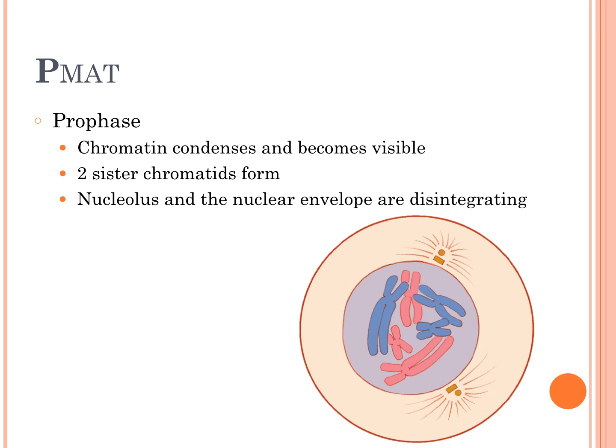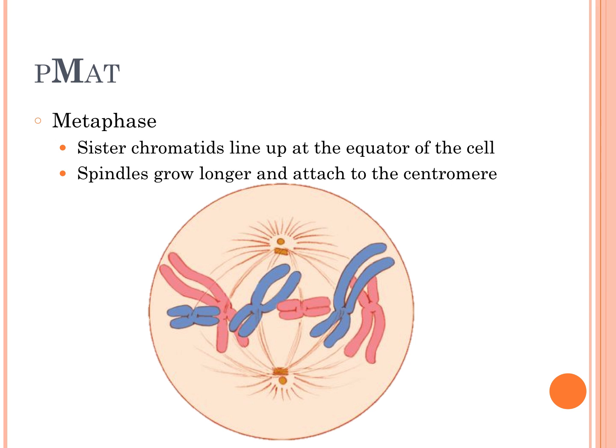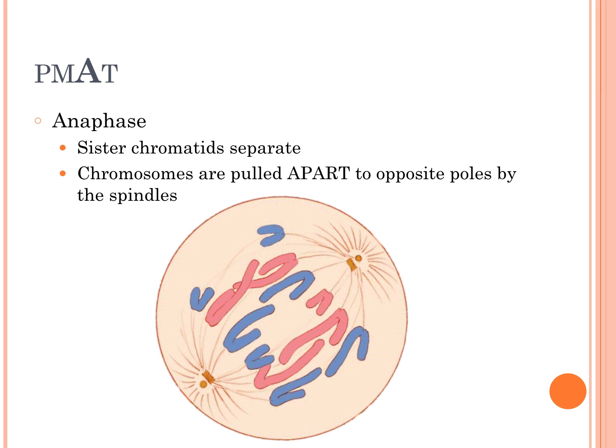Then we have metaphase — that's when the sister chromatids line up at the equator of the cell. Metaphase means middle. The spindles grow longer and attach to the centromere; they come out from the centrioles and attach to the chromosomes so they can begin to divide them. Next is anaphase — anaphase means apart — so the sister chromatids get separated as the spindles pull them to opposite sides of the cell.